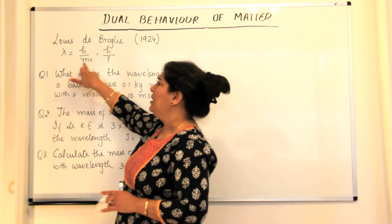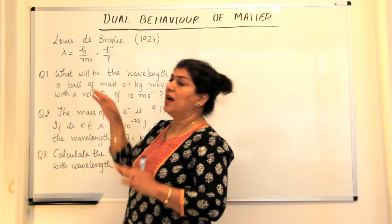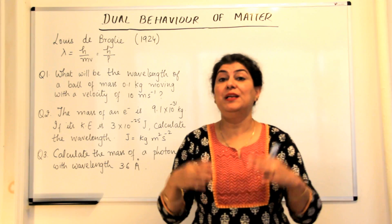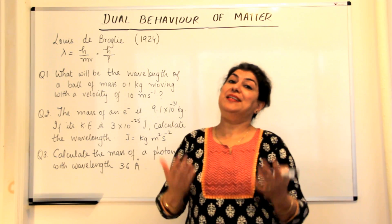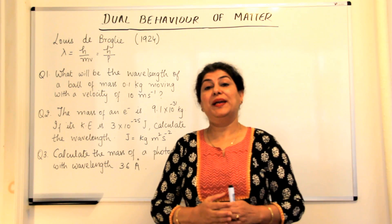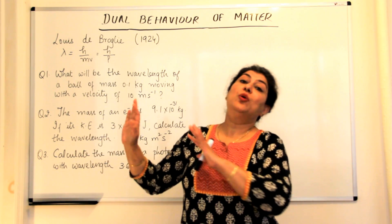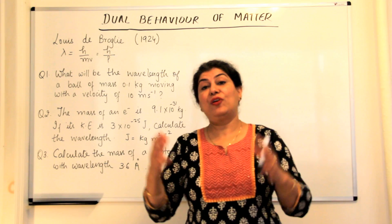So the wavelength that is calculated if the mass is large would be so small that it would not be possible to see it or to identify it, and that's the reason why the wave nature of matter was hidden from scientists for a very long time.